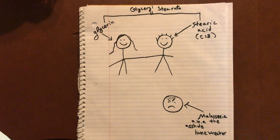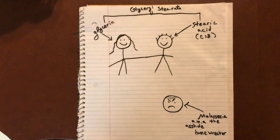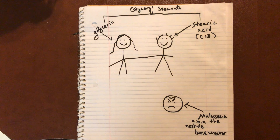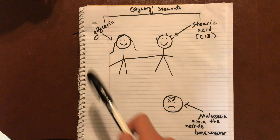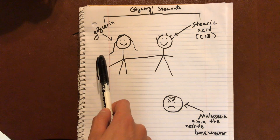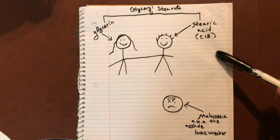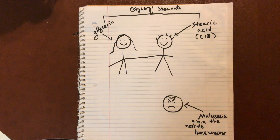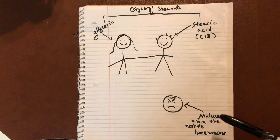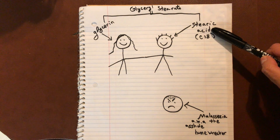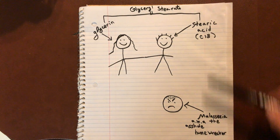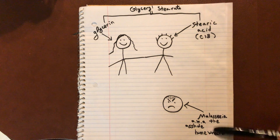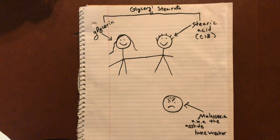I know the chemists watching this right now are like, oh my God, what is he doing? But anyways, so here we have glycerol stearate, which is a combination of glycerin and stearic acid. Stearic acid has a carbon chain length of 18, which means that malassezia can feed on it — it can grow in the presence of stearic acid.